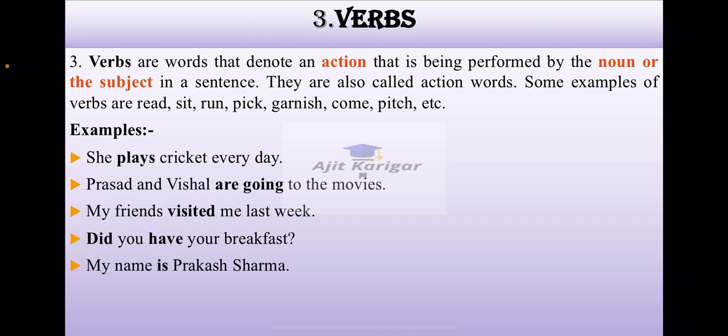Examples in sentence: She plays cricket every day. Here plays is an action word. Prasad and Vishal are going to the movies. The action done by Vishal and Prasad is they are going, so going is a verb here. My friends visited me last week. Did you have your breakfast? My name is Prakash Sharma.